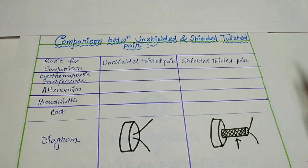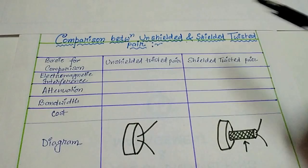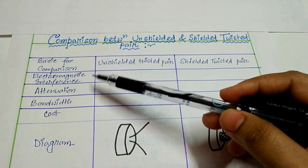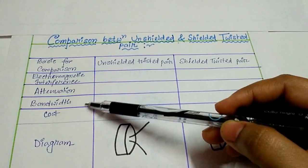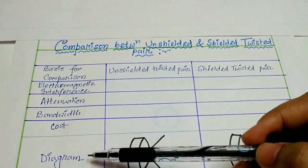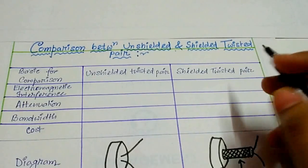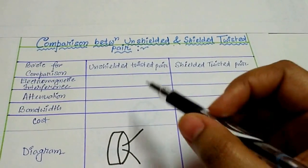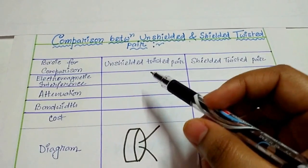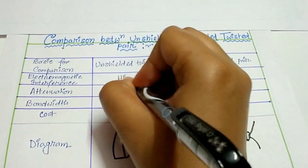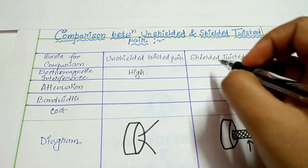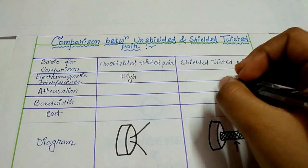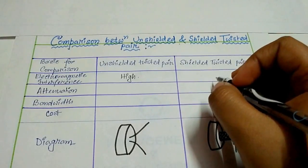The basis of comparison is electromagnetic interference, attenuation, bandwidth, and cost, as well as diagrams. For unshielded twisted pair, the electromagnetic interference is high, and for shielded twisted pair it is low.